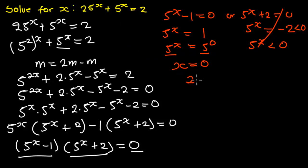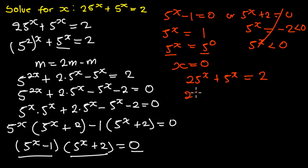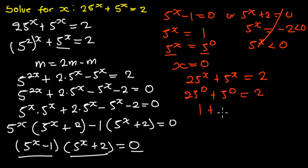Let us verify: substituting x equals 0 into 25 exponent x plus 5 exponent x equals 2, we get 25 exponent 0 plus 5 exponent 0, which is 1 plus 1, equal to 2. And 2 equals 2, confirming our answer.